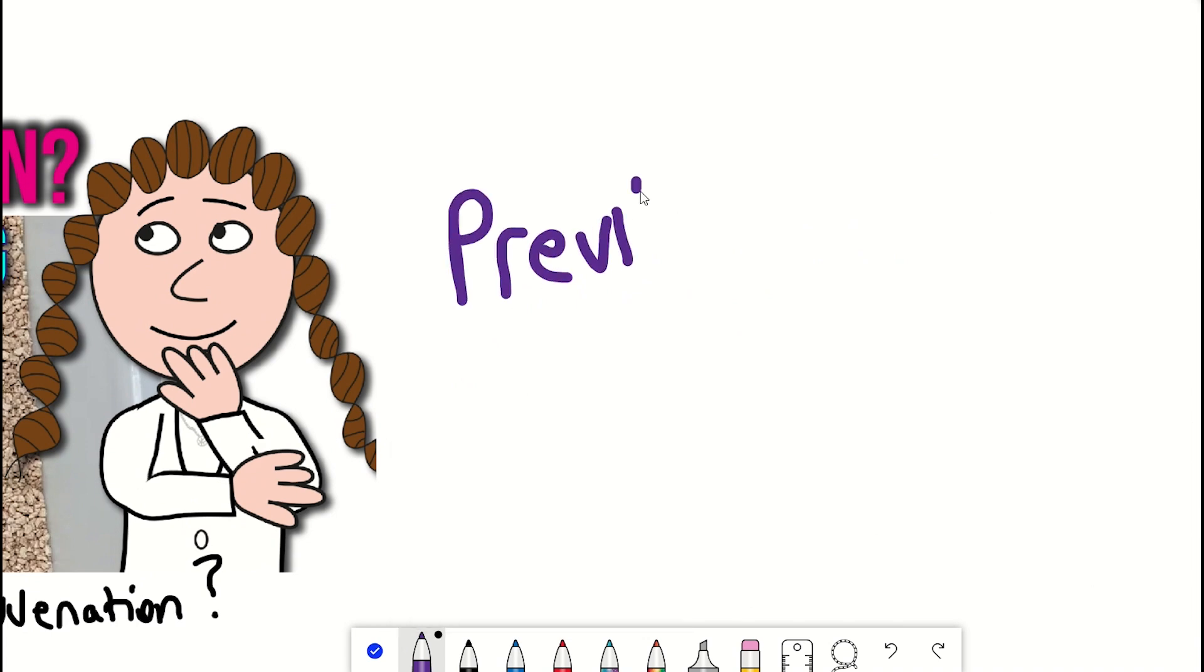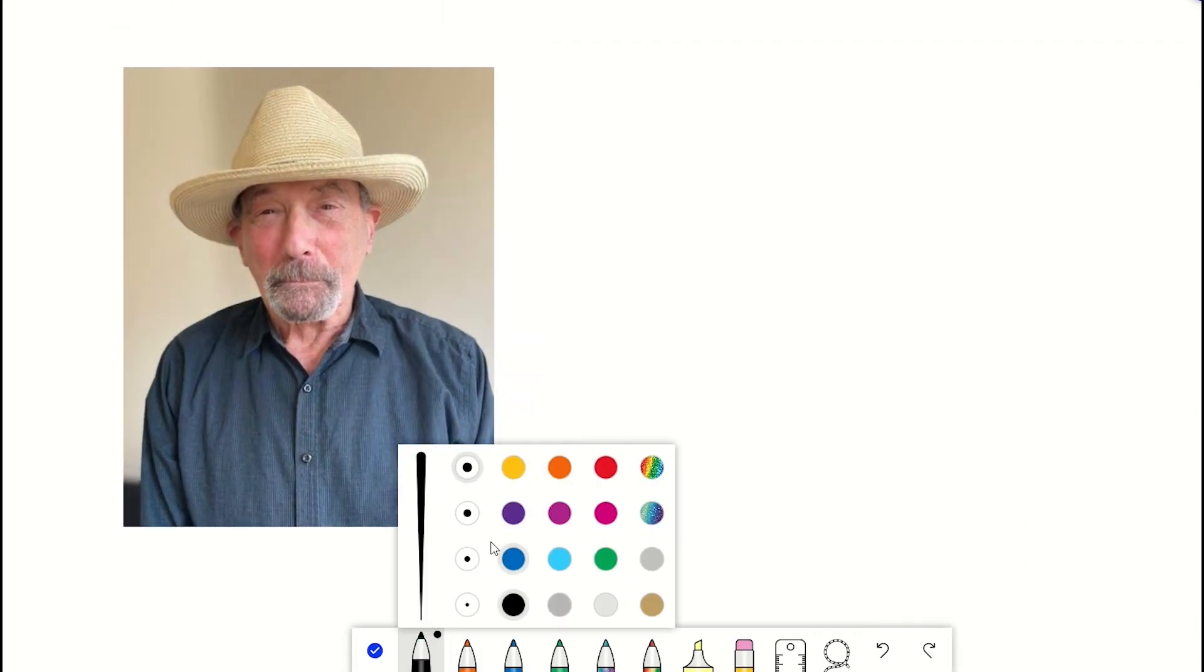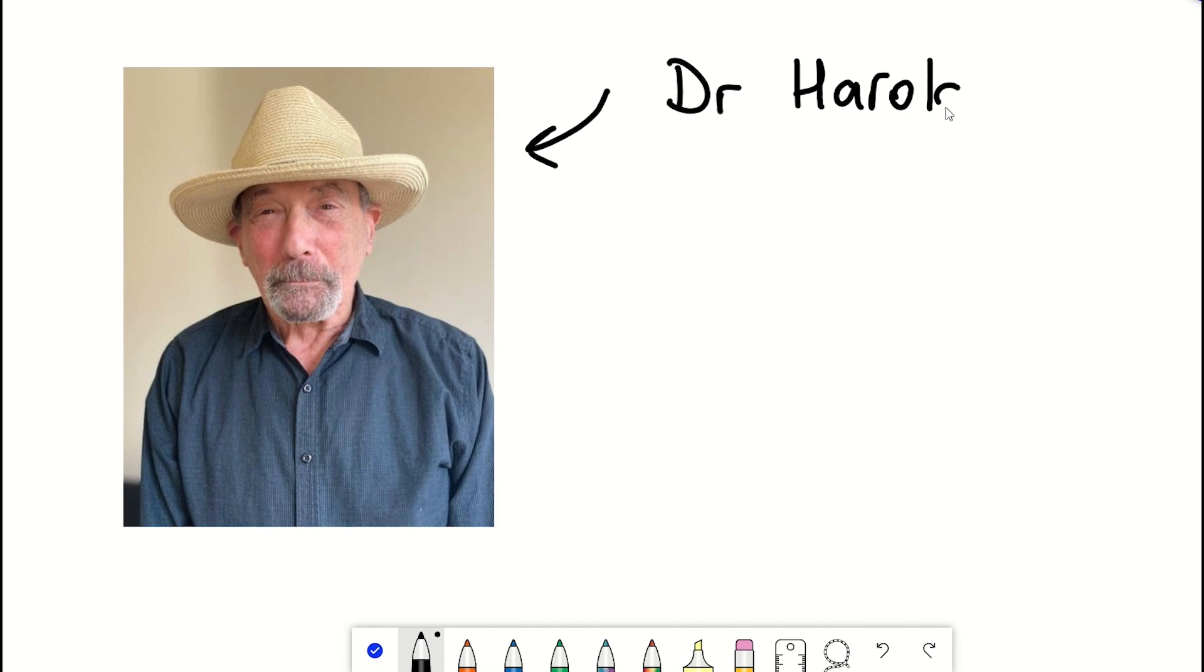So firstly we should probably recap on what I mentioned last time. The story begins with Dr. Harold Katcher who, on coming across some early work on heterochronic parabiosis, began his own search for a human rejuvenation therapy.